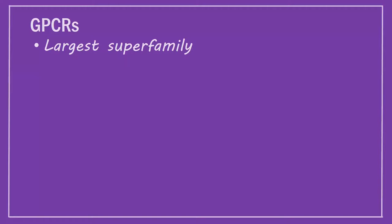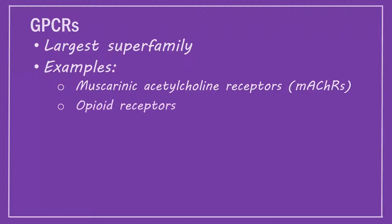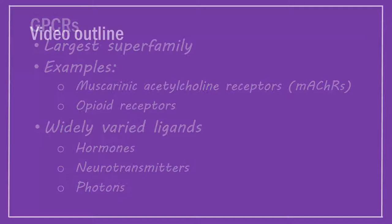As the largest superfamily, signalling via GPCRs underpins many physiological processes. Examples of GPCRs include muscarinic acetylcholine receptors and opioid receptors. The endogenous ligands of GPCRs are highly varied and include hormones, neurotransmitters, and even photons.